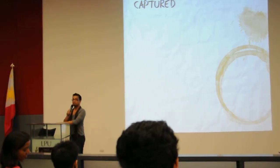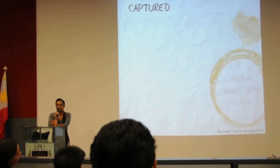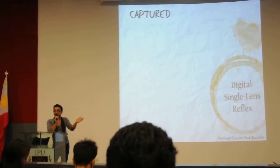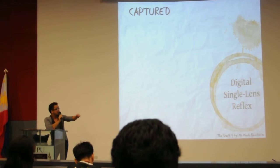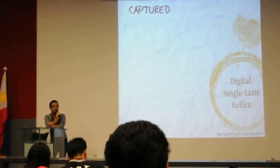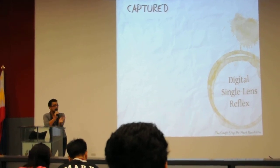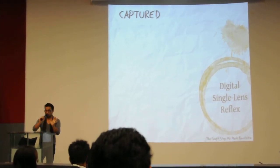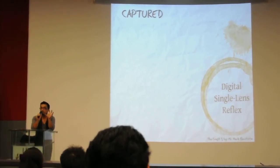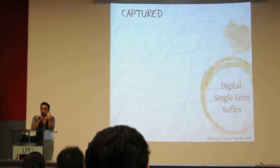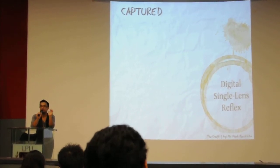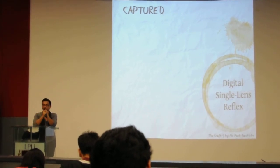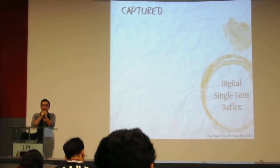DSLR — what does that mean? Dun mo na tayo mag-start. Digital single lens reflex. So, there are two types of digital cameras. This is one of them — digital single lens reflex — which we will be tackling just a brief part of it. We do not have the time to discuss each and every part of the camera as well as how to use it.